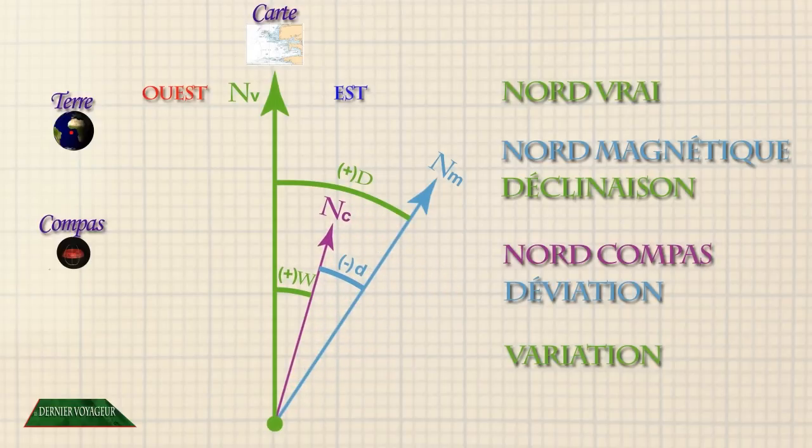Nord magnétique à l'est du nord-vrai, déclinaison positive, déviation négative, variation positive.